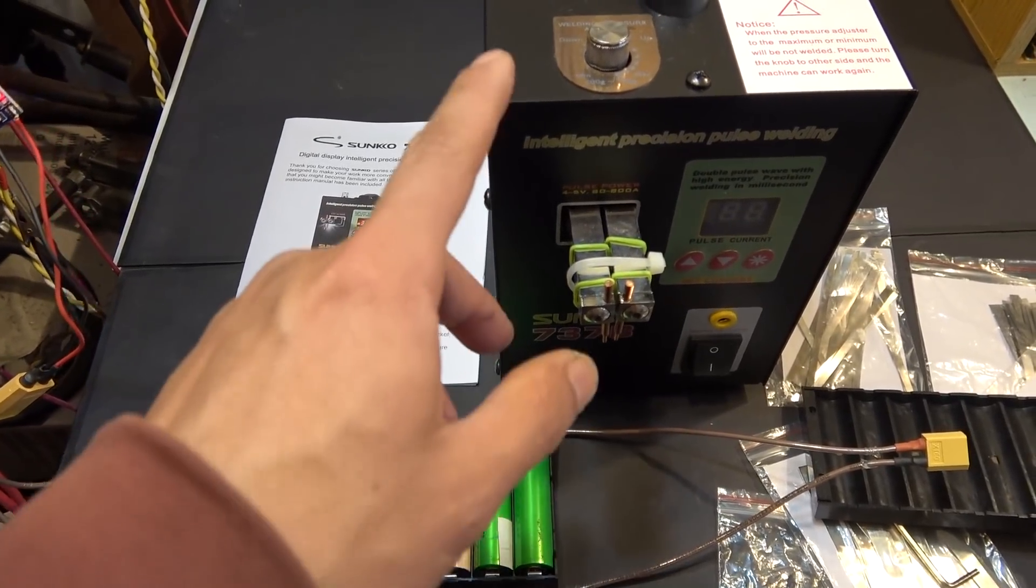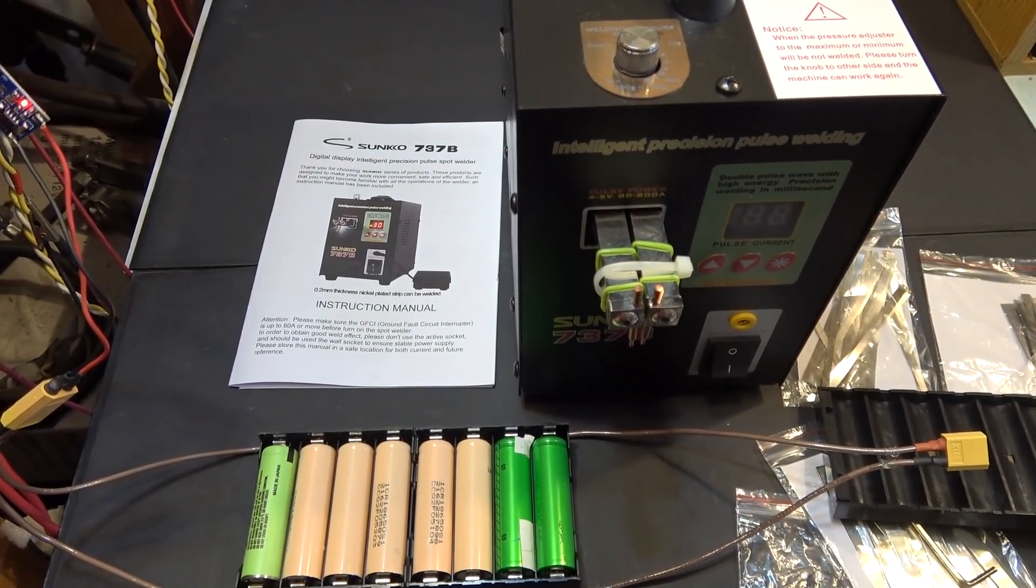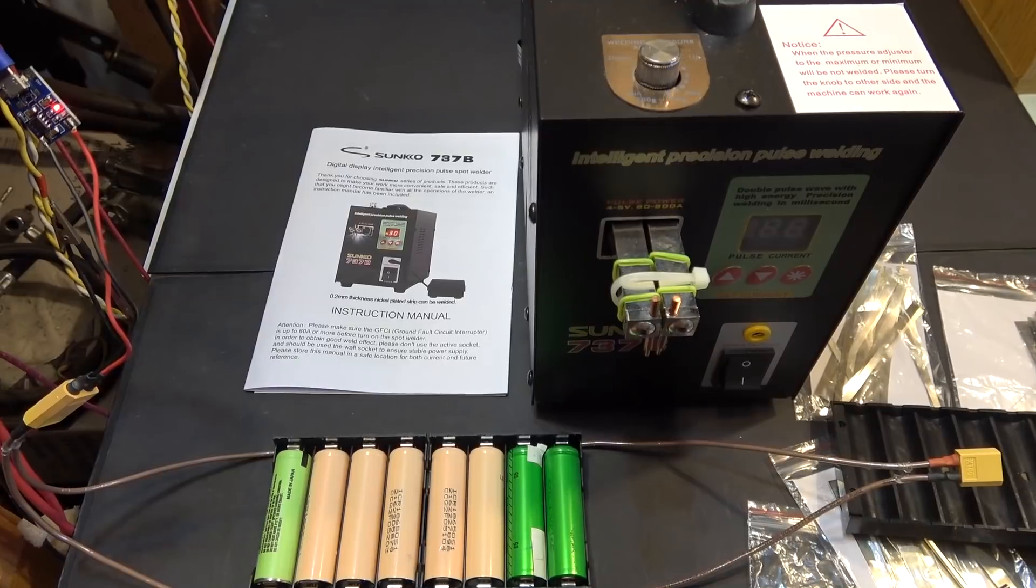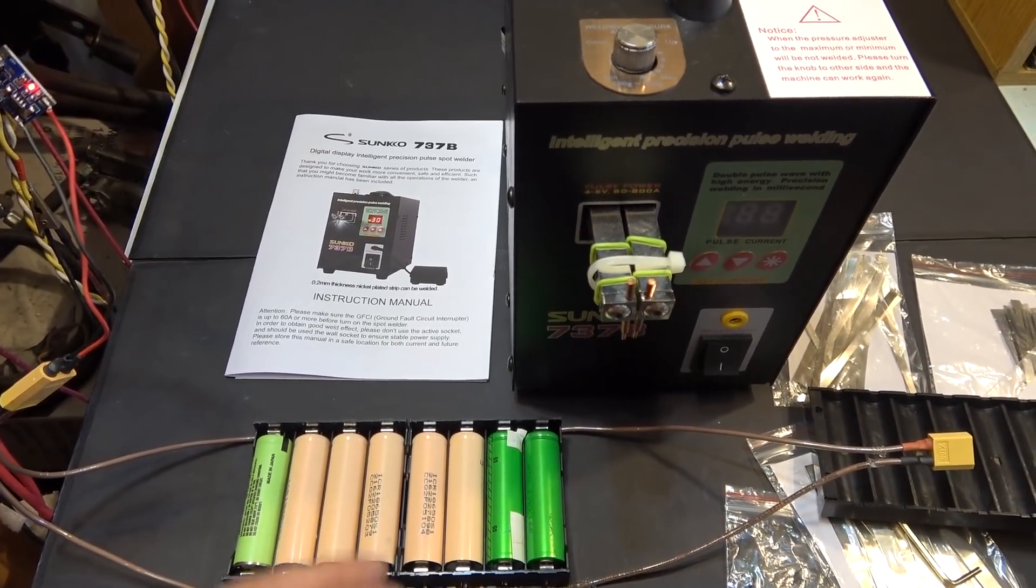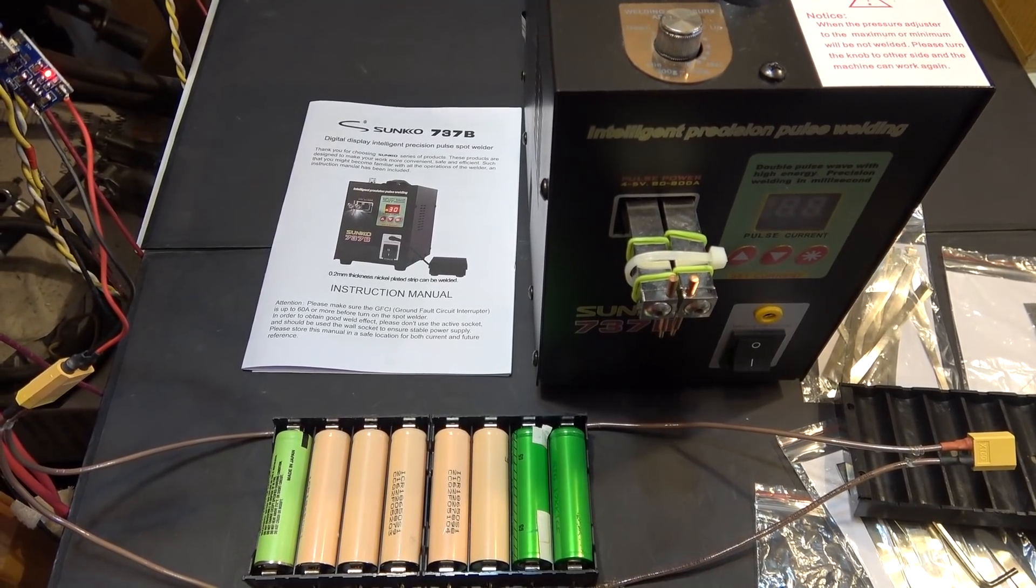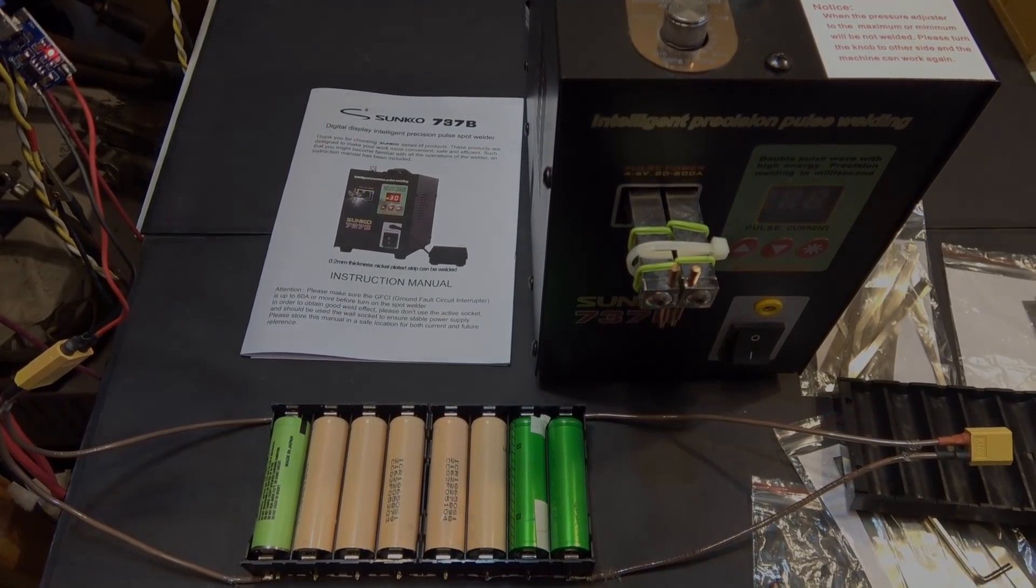And by the way, as you can see, this is my new spot welding machine. I'm trying to use this to make my new e-bike battery instead of soldering. I'm also going to make a review of this product and it's going to be my next video. I'll see you then. Thanks for watching.